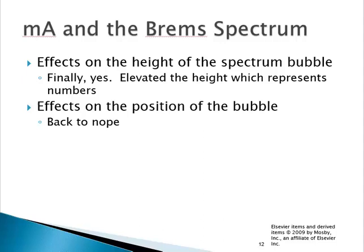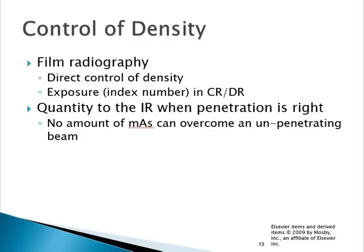Control of density: remember that density equals exposure. In film radiography there was a direct correlation between MAS and density. Whenever we increased KVP, we did increase density provided we didn't change our MAS, but we altered the imaging characteristics of the x-ray beam — a visible change in contrast. So mass only controlled density, KVP controlled density and contrast. Mass was our direct control of density.